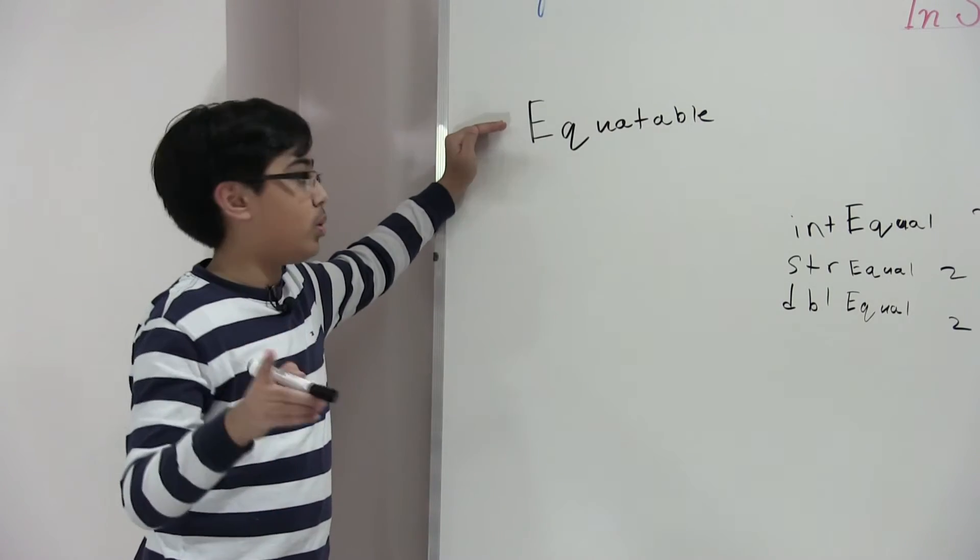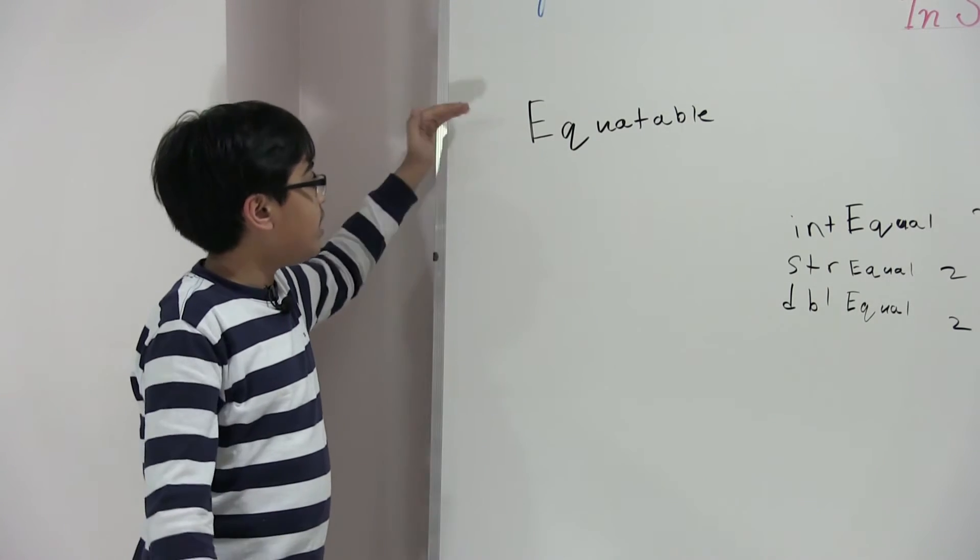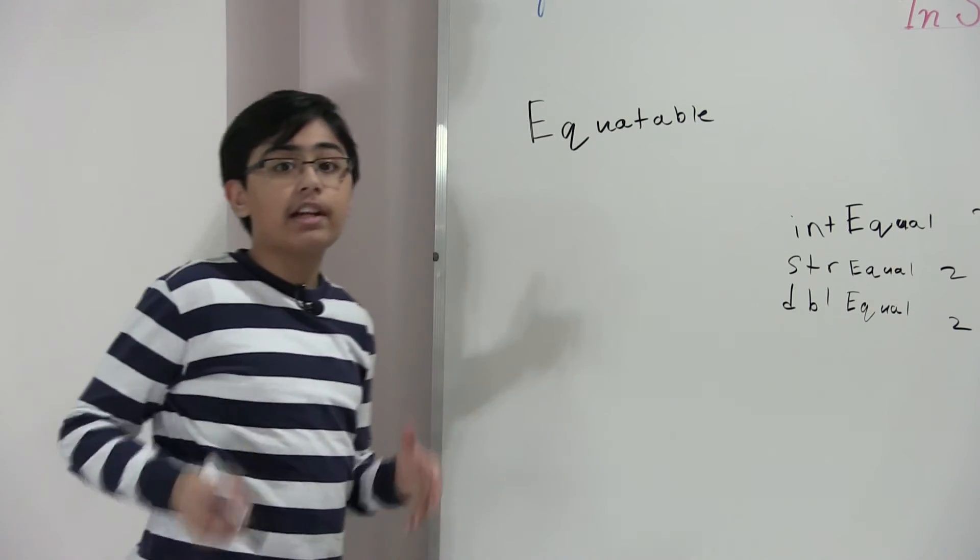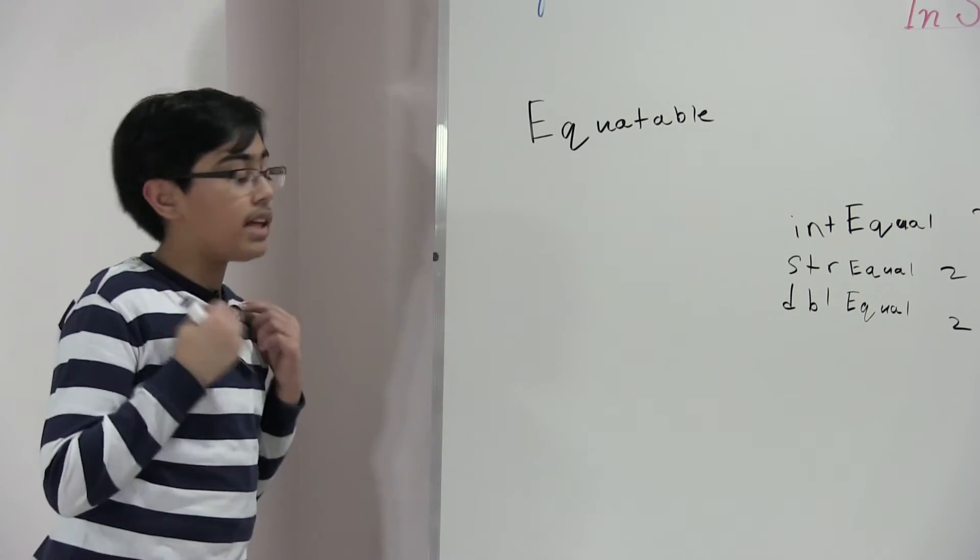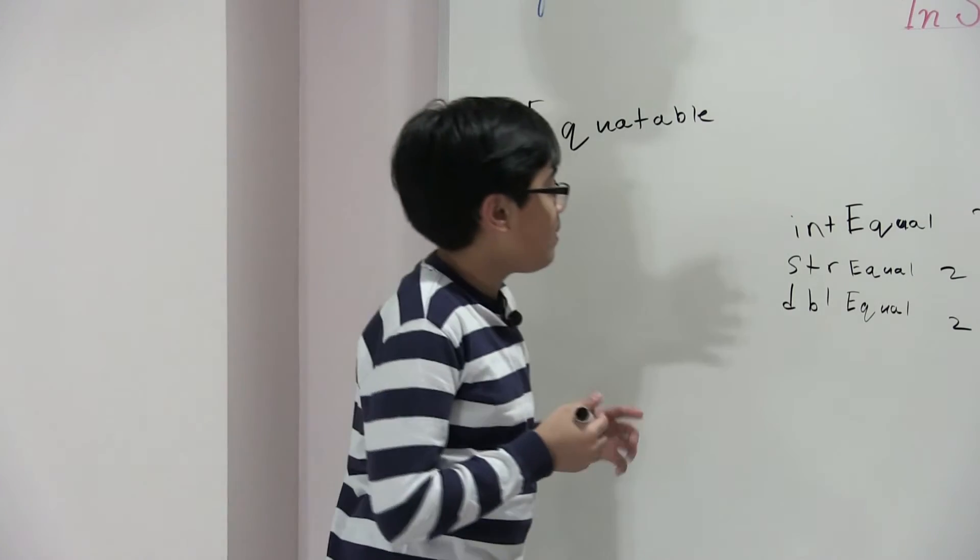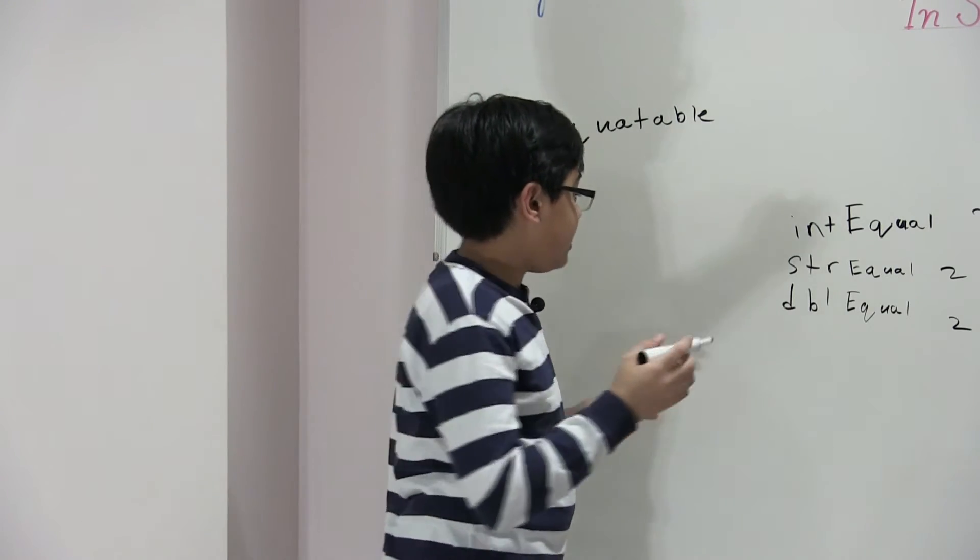And so this is a default in Swift 2. And so now what we want to do is we're going to create something called a generic function. What we're going to do essentially is this will take a T variable.